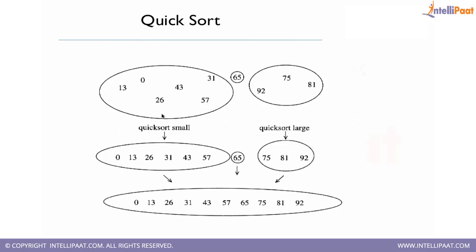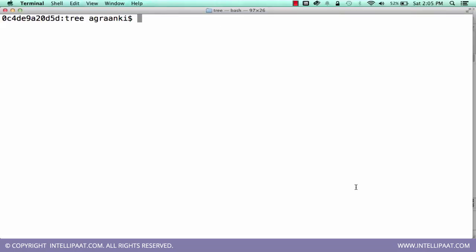Pictorially, quick sort works like this: assume a large set. We select one pivot element, say 65, and divide our array into two portions — one with values less than 65 and one with values greater than 65. We solve each smaller portion and combine the solutions to get the final result where the entire array is sorted. Let's now write some code to understand how quick sort works.